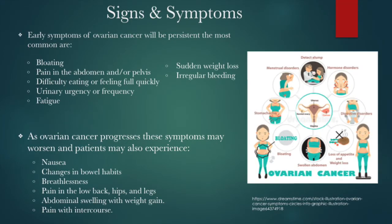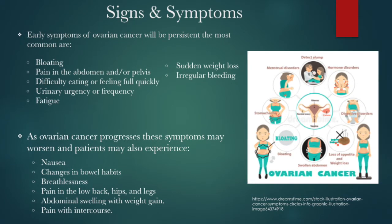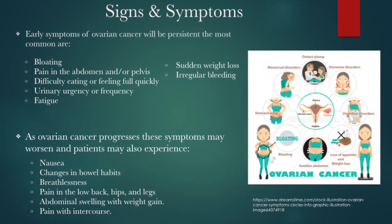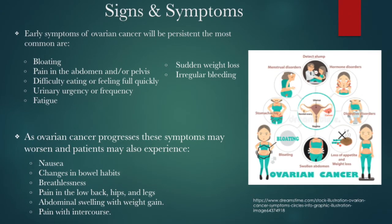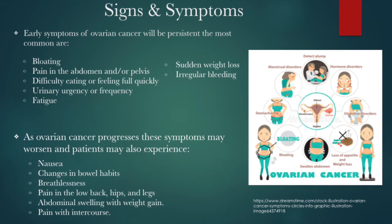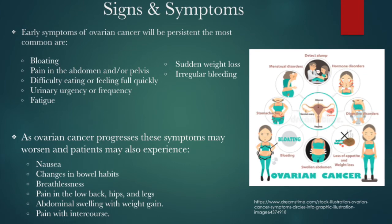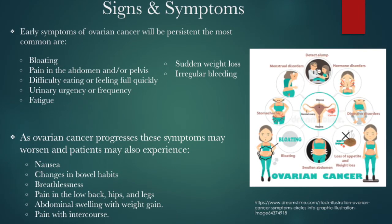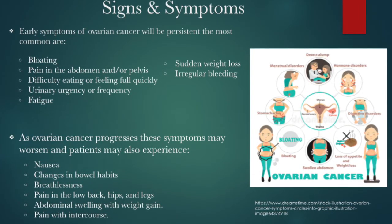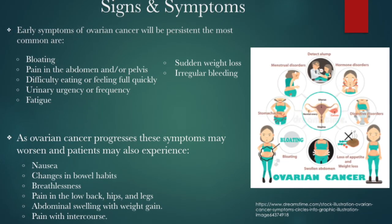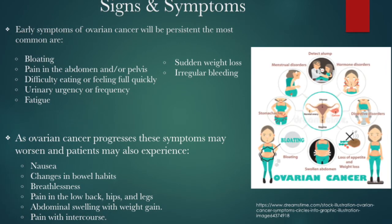The signs and symptoms of ovarian cancer can be very vague and easily dismissed. When the symptoms are caused by a true ovarian cancer, they will be persistent. Some of the most common symptoms of early stage ovarian cancer are bloating, pain in the abdomen and pelvis, difficulty eating or feeling full quickly, urinary urgency or frequency, fatigue, and sudden weight loss or irregular bleeding. These symptoms will persist and present as more severe as the disease progresses.